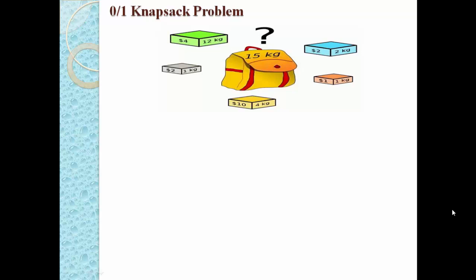First of all, what is the knapsack problem? Suppose we have one knapsack — a knapsack is nothing but a bag — and we have a number of items or objects. Every item has some weight and value. For example, one object has a weight of 12 kilograms and a value of $4; another has a weight of 1 kilogram and a value of $2; another has a weight of 4 kilograms and a value of $10. Like that, every object has some weight and value, and we have one knapsack.